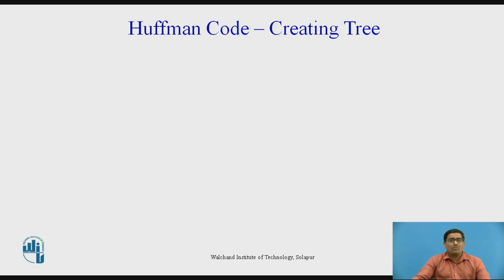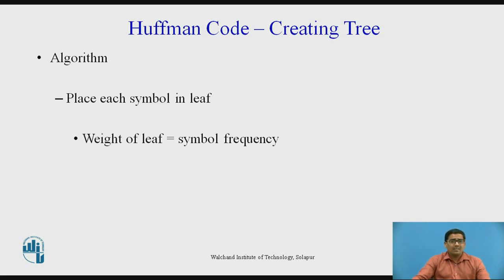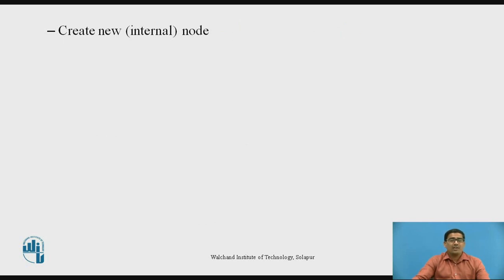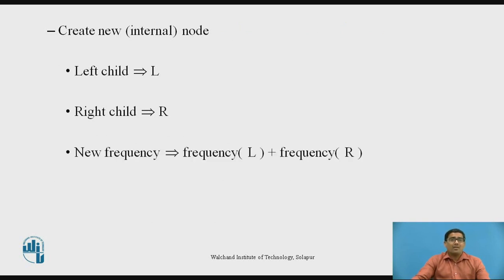Now we want to see Huffman code — that is, creating a tree. From the previous steps of the algorithm, first place each symbol in a leaf, where the weight of the leaf is equal to the symbol's frequency. Then select two trees — left and right, initially leaves — such that L and R have the lowest frequency in the trees. Create a new internal node where the left child is L and the right child is R, and the new frequency equals frequency of L plus frequency of R. Repeat until all nodes merge into one tree.